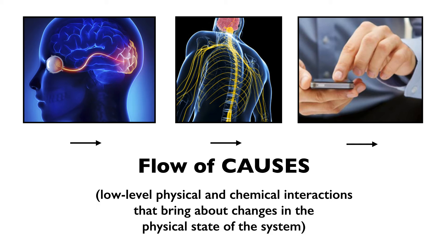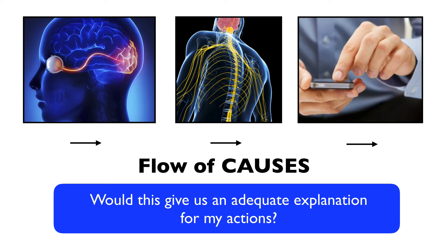Think of a causal mechanical story like this, extended through the whole duration of the action sequence. It involves trillions of neurological and biomechanical components interacting in a coordinated way. And let's grant, for the sake of argument, that there is a true story of this kind, at this level of description, that accounts for the movement of my body through space and all its various behaviors — like pressing icons on the iPhone, reading the text on the screen, grabbing the umbrella, and so on. Now imagine that we have this complete causal mechanical explanation in our hands. Would this be an adequate explanation for my actions?